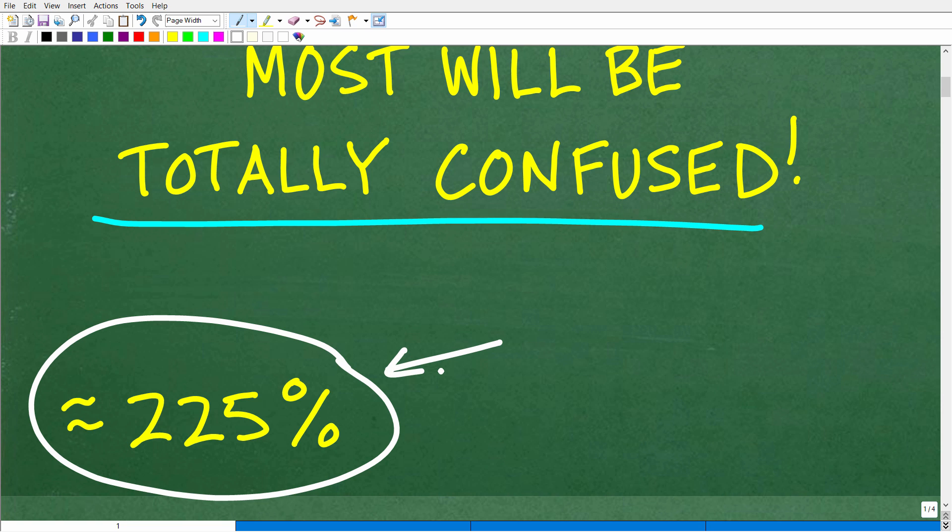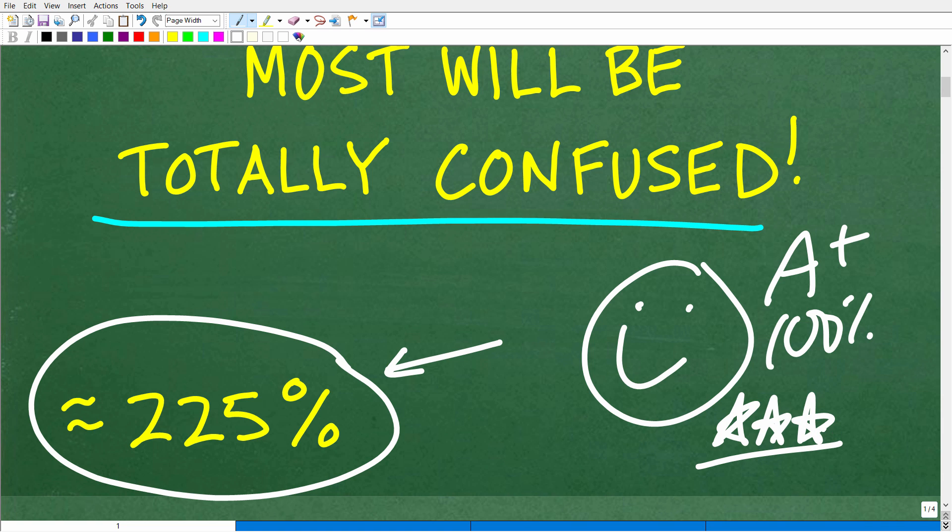But if you got this right, that is fantastic. We have to celebrate by giving you a nice little happy face and a plus, 100%, and multiple stars. You can brag to your friends and family that you are an expert in place value, percent, fractions. As a matter of fact, you are a guru in arithmetic and basic mathematics, and that is no small achievement.